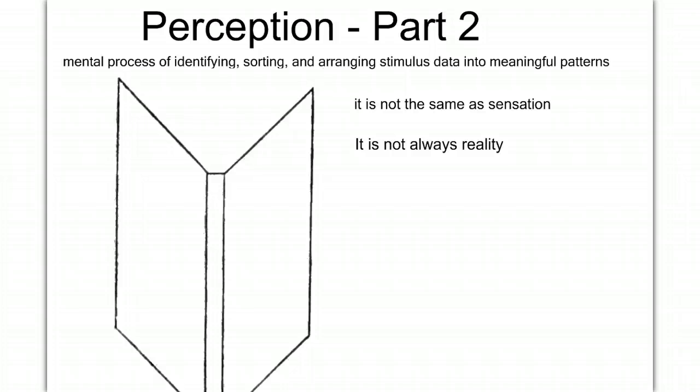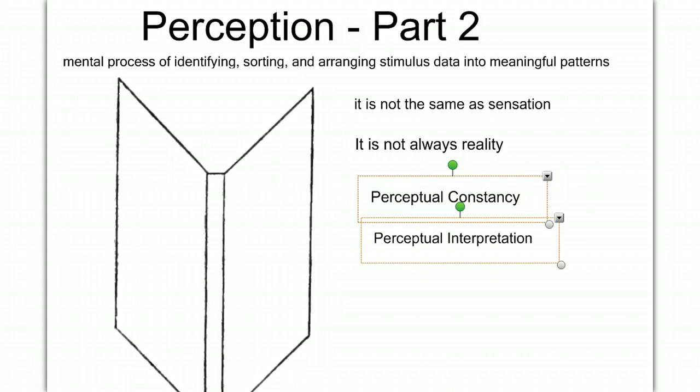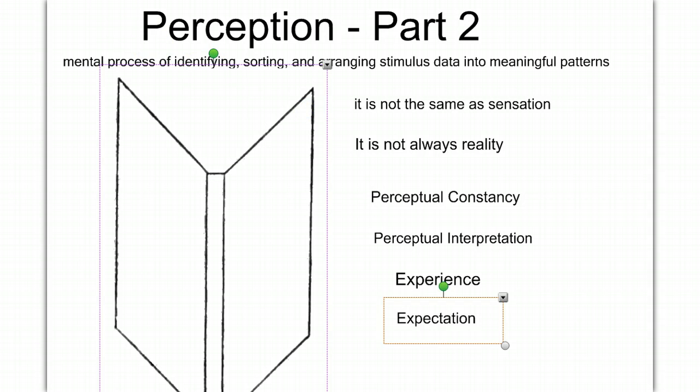In part two, we will investigate the concept of constancy and perception. We will look at how we interpret this information, and we will see how experience, expectation, culture, and even emotion can affect perception.